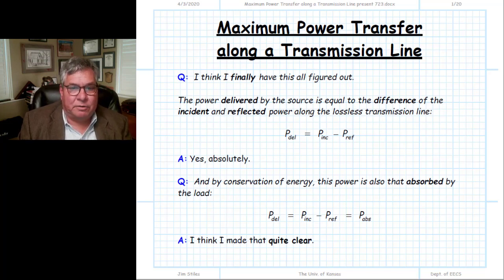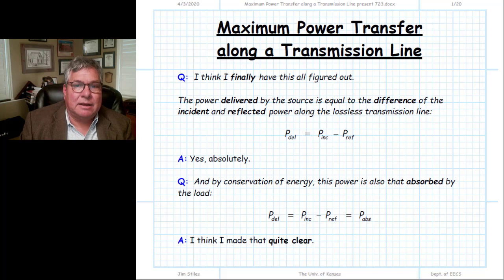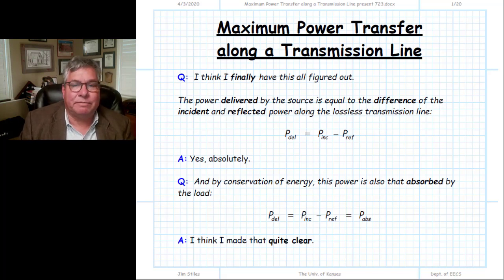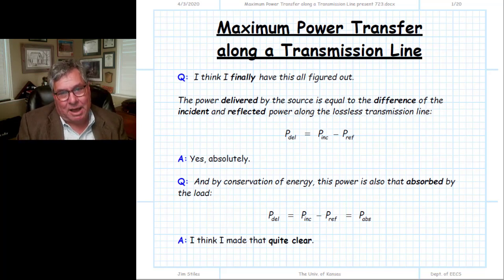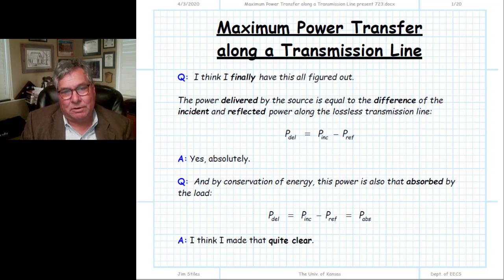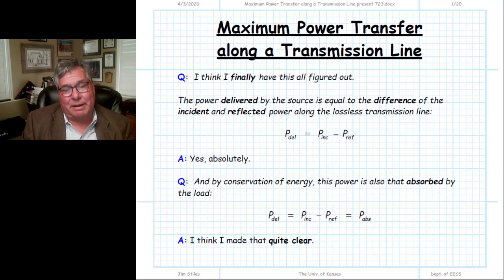We know that the delivered power from a source is equal to the net power along the transmission line, which is equal to the power absorbed by the load. The net power is equal to the difference between the incident power and the reflected power along the transmission line. There is one other kind of power we have yet to talk about: the available power of the source. How is the available power related to delivered power?